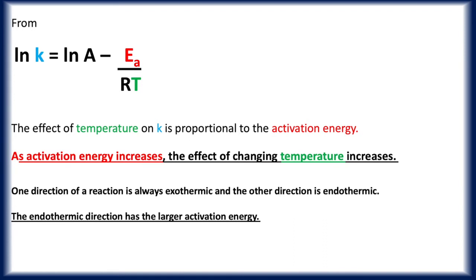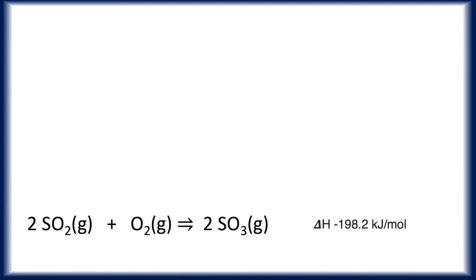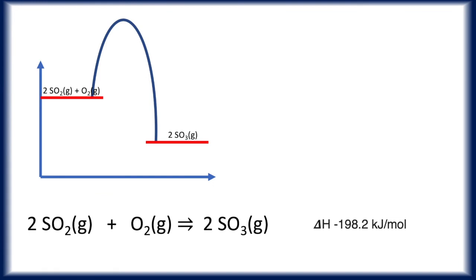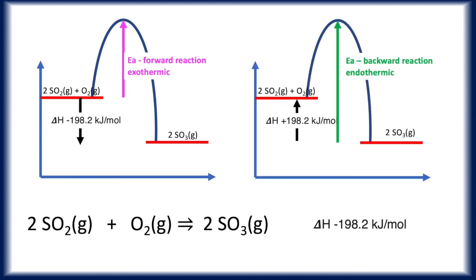So let's just double check that. If we go back to our sulfur dioxide equilibrium, delta H tells us that the forward reaction is exothermic, and that's our activation energy. And the backward reaction is endothermic, and that's the activation energy for the backward reaction, which you can see is much greater than that of the exothermic activation energy.